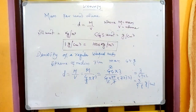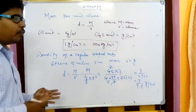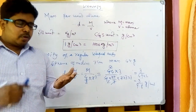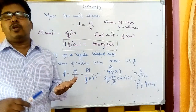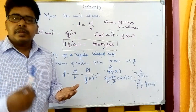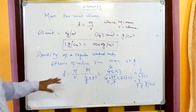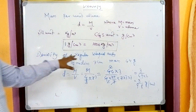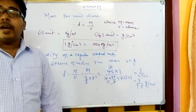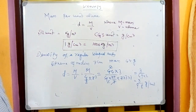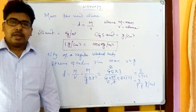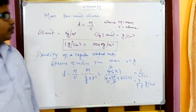This is the method for regular shaped objects. We know the volume formulas for a cube, cuboid, sphere, cylinder, and cone. Using mass divided by volume we can find density. In the previous class I gave you some numericals on this and you have done them.